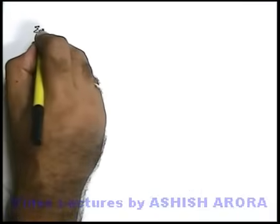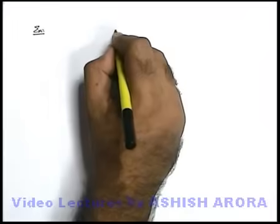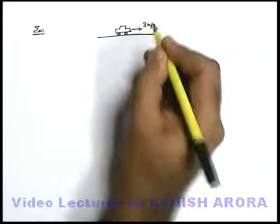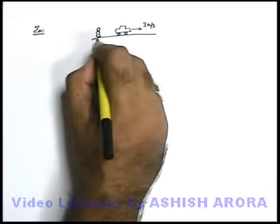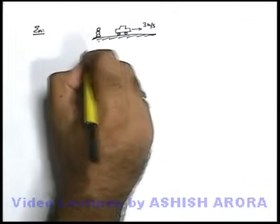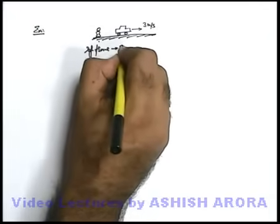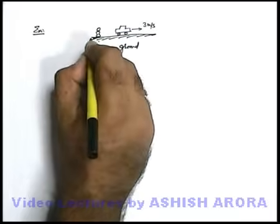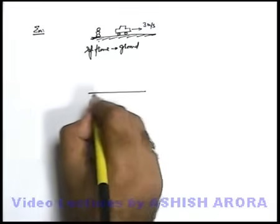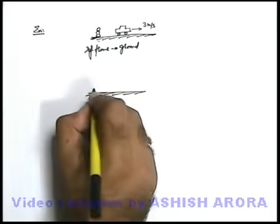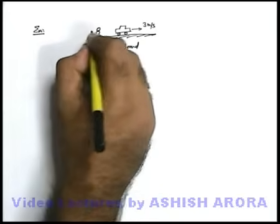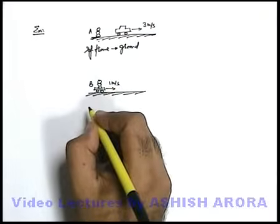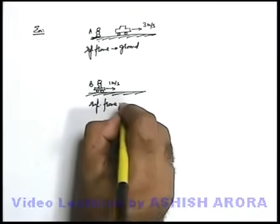Let's take another example to understand the concept of reference frame. Say we have a car moving at a speed of 3 meters per second, and observer A is standing at rest on the ground. So we can say the reference frame of this observer is ground, because he is measuring the motion parameters of this car from the ground. Now if we consider another observer B who is moving on a trolley at a speed of 1 meter per second, then we can say the reference frame for observer B is the trolley.